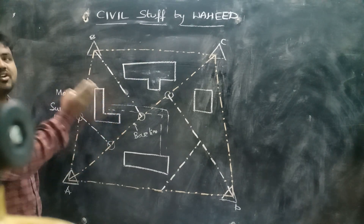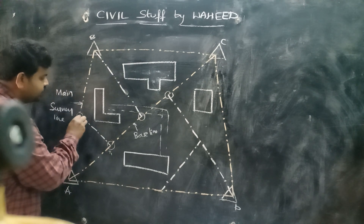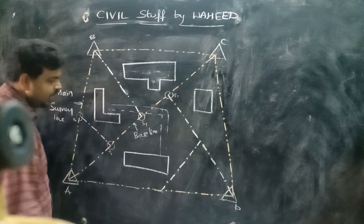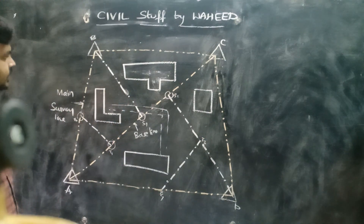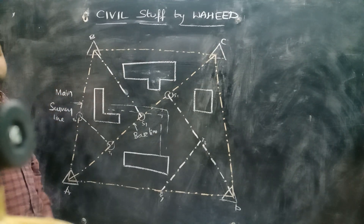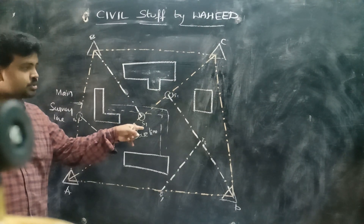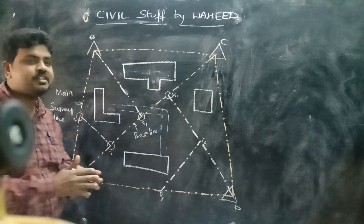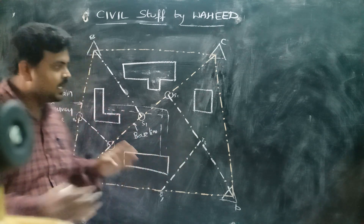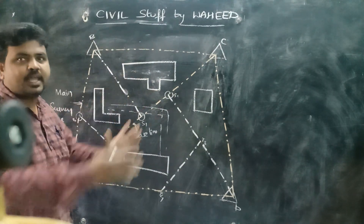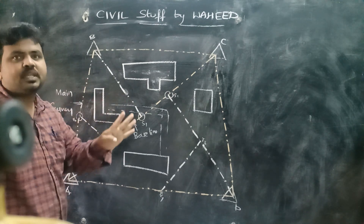Next, to form a network of triangles — you can see triangles here. I'll label them T1, T2, S1, S2, T3, T4, and so on. Subsidiary stations are used in order to frame a network of triangles. The principle of chain surveying is chain triangulation — dividing the area into a number of small triangles. Those small triangles should be either an ideal triangle or a well-conditioned triangle, but not an ill-conditioned triangle.